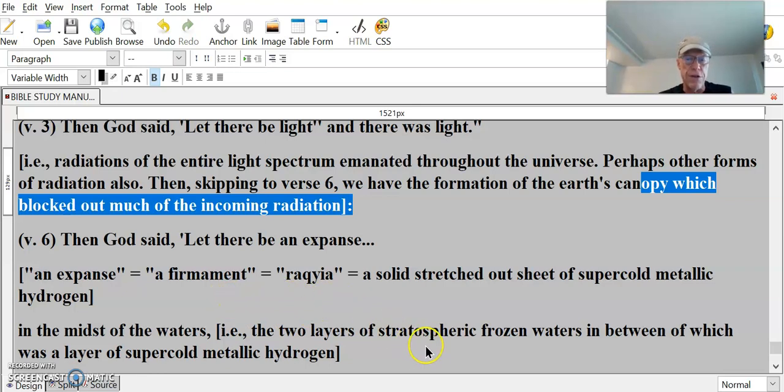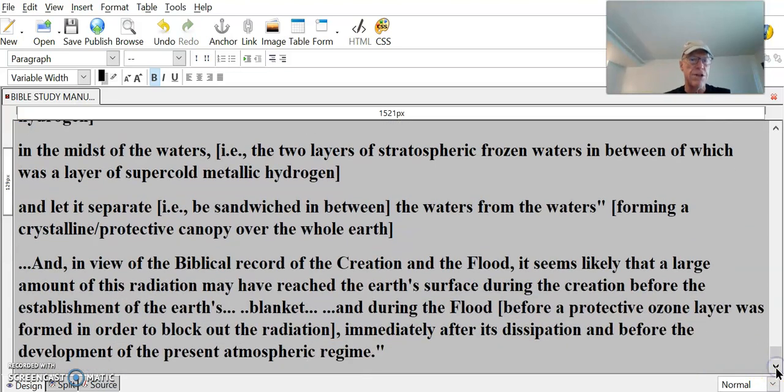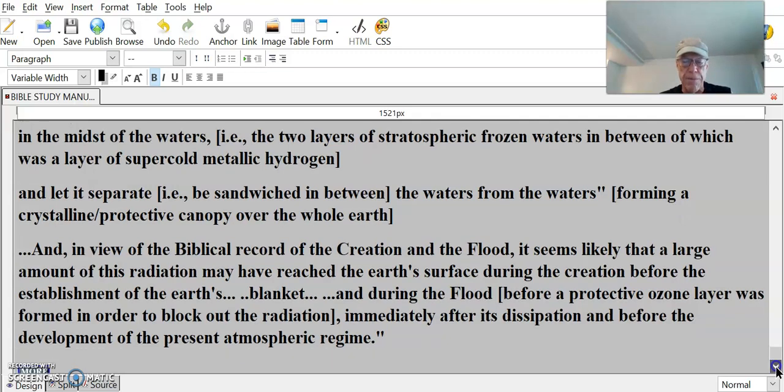In the midst of the waters, the two layers of stratospheric frozen waters in between, of which was a layer of super-cold metallic hydrogen. And let it separate, be sandwiched in between the waters from the waters, forming a crystalline protective canopy over the whole Earth. And in view of the biblical record of the creation of the Flood, it seems likely that a large amount of this radiation may have reached the Earth's surface during the creation before the establishment of the Earth's blanket. And during the Flood, before a protective ozone layer was formed in order to block out radiation immediately after its dissipation and before the development of the present atmospheric regime.